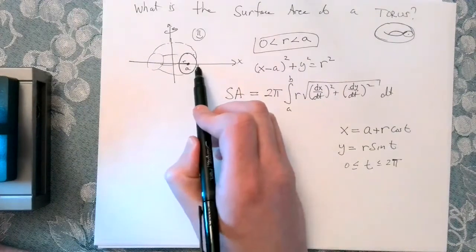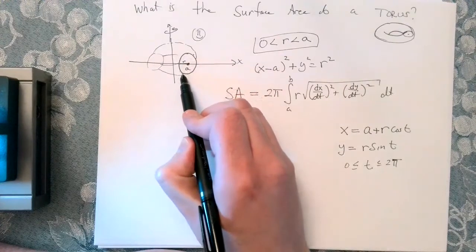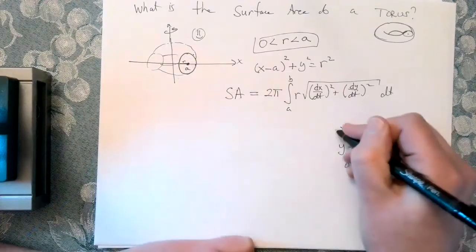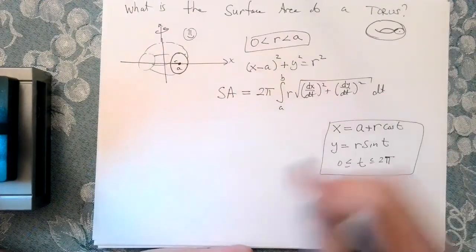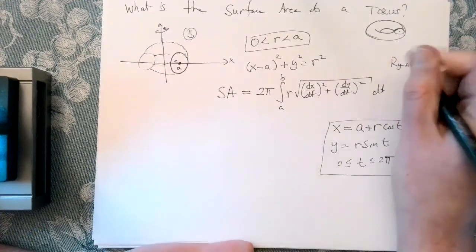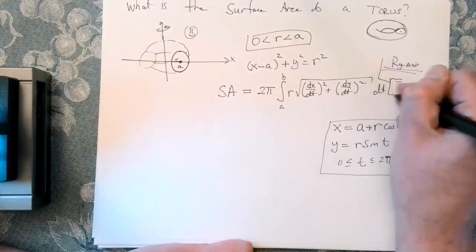And then as t goes through the interval, 0 to 2 pi, by the time I make it back to 2 pi, I've generated the full circle. So this works. Now, since we're rotating around y, that means that r will be equal to x of t. That's not bad. So we have all the bits and pieces.